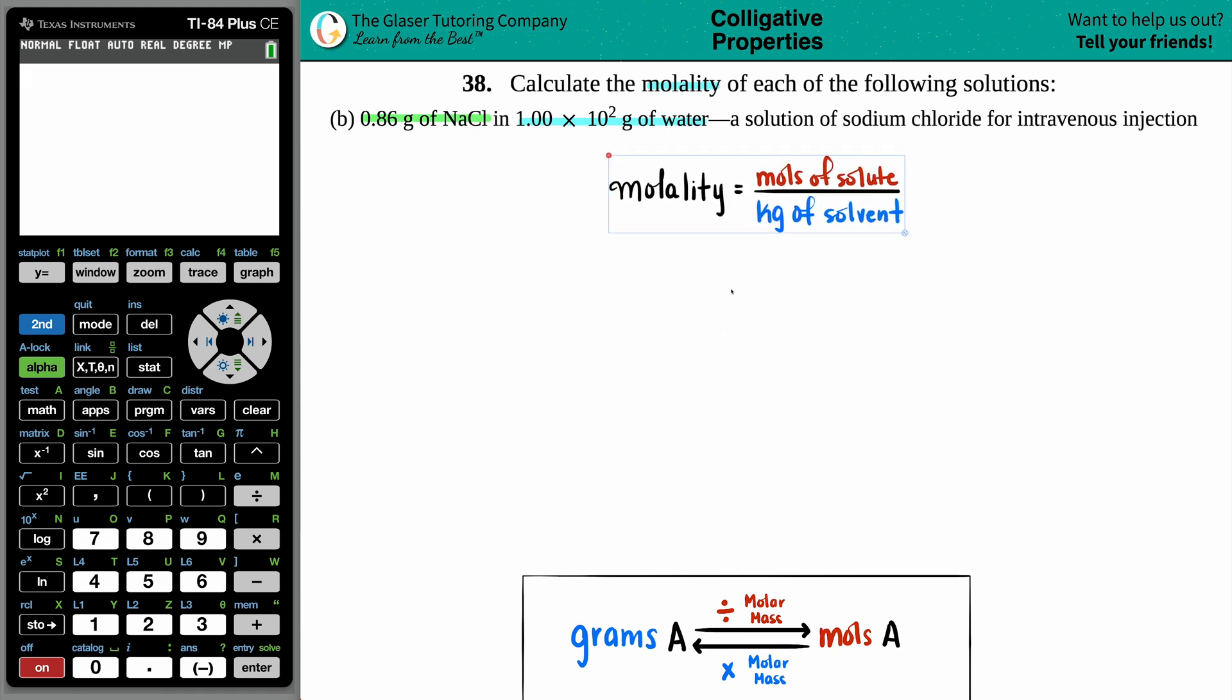Molality equals moles of solute divided by kilograms of the solvent. And just know that anytime that you start seeing little squiggly M's being thrown around, that's the universal sign for molality. Capital M is molarity with the R in there. Molality is this little italics M.